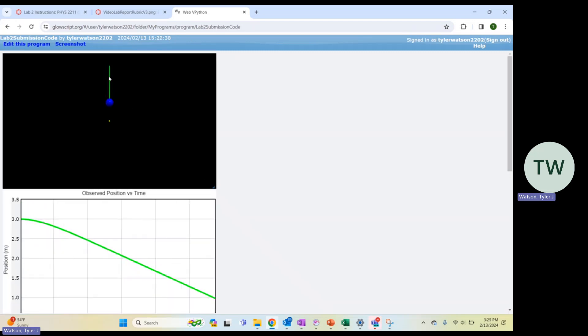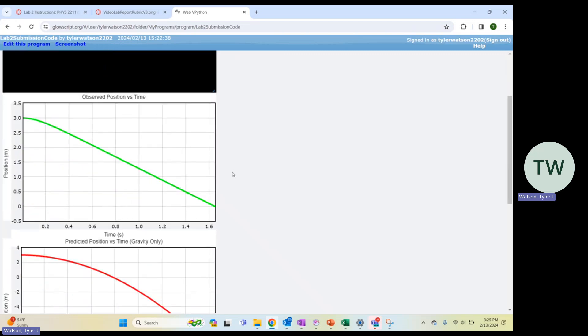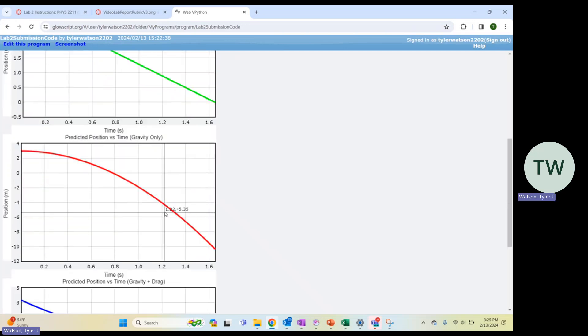So when we run the program, you can see the ball or the eraser in our case is being dropped from three feet high. Obviously the eraser is not going to go into a negative position. It will just hit the ground. But this is very easy to see when our object is hitting the ground.